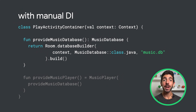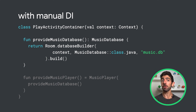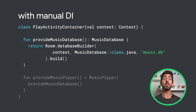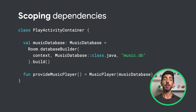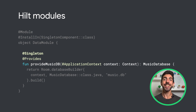Back to our manually-created PlayActivityContainer code — every time the MusicDatabase dependency is required, we are creating a different instance of it. That's not ideal, since we might want to reuse the same instance of MusicDatabase throughout the whole app. Instead of a function, we could share the same instance by having all that code in a variable. Basically, we are scoping the MusicDatabase type to this class, as we are always providing the same instance. How to do this with Hilt? Well, no surprise — with another annotation!